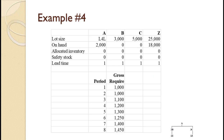Here is an example for you to try. The bill of material, gross requirements for A, and the inventory data for A, B, C, and Z are shown on the slide. We wish to complete the MRP plan. Since you have seen an example already, pause the video and try to work this problem on your own. Once you are done, you can use the video to check your work and spot any mistakes.